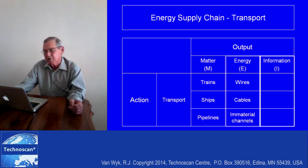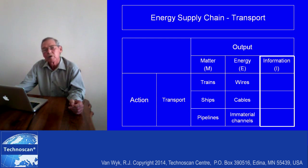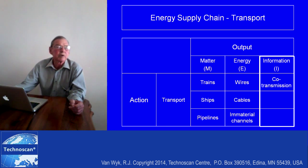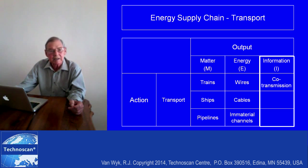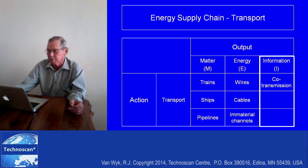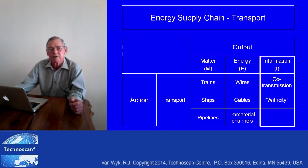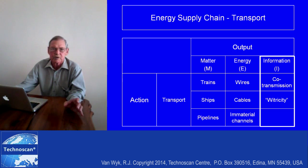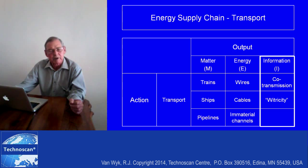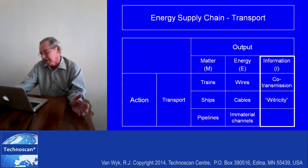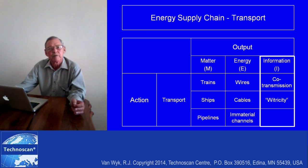On the information side of transportation, we can look at co-transmission — using the same wire to carry both energy and information, which we already use in the home. Another example is y-tricity, which is the use of very subtle energy emanations at the level of information emanations to transmit electricity. These are examples, and there are 15 or so in practice.